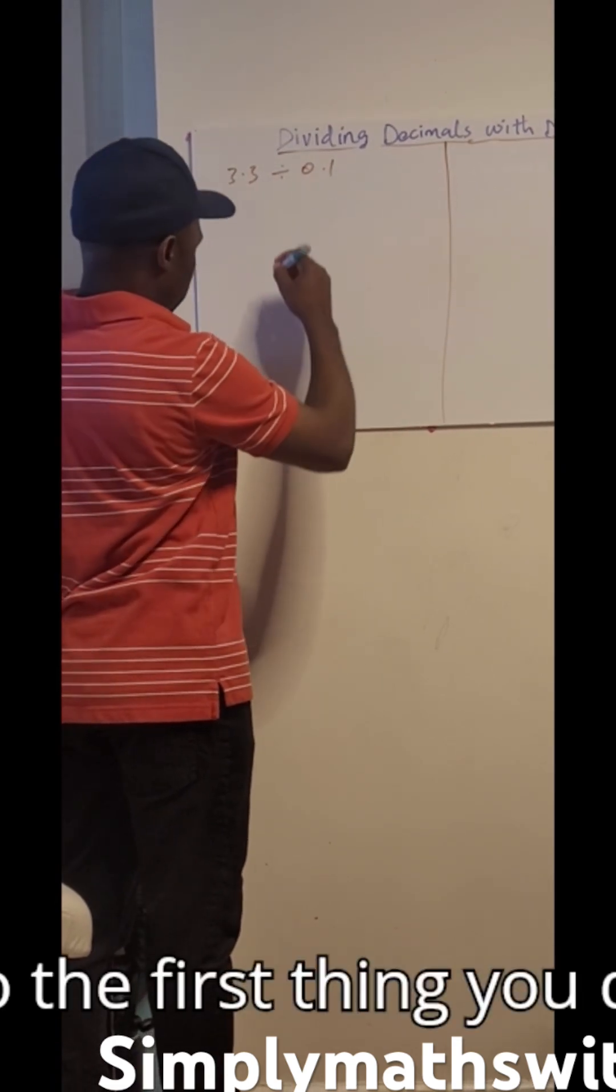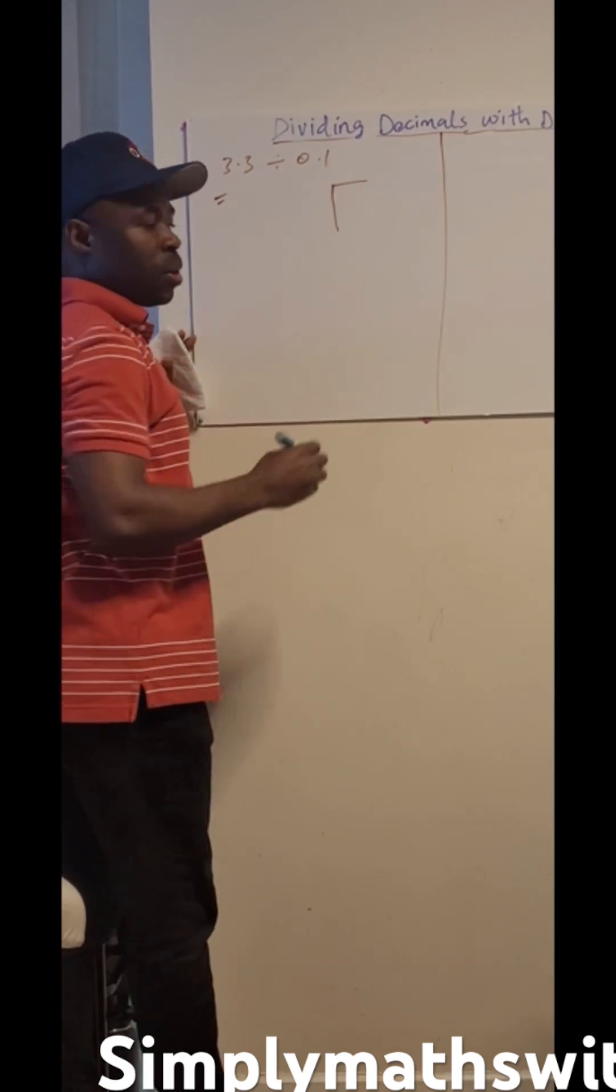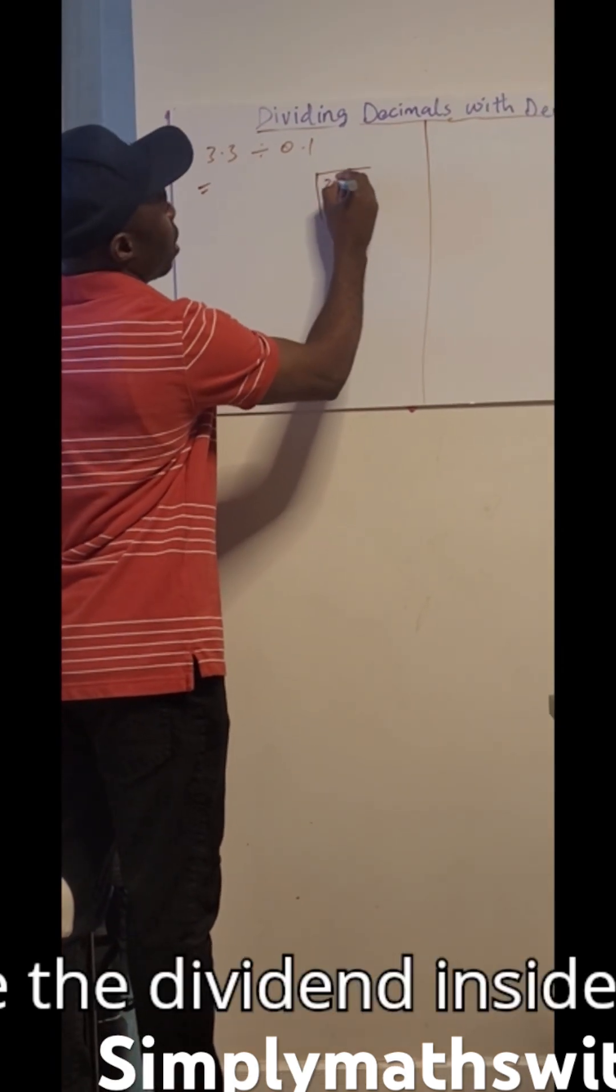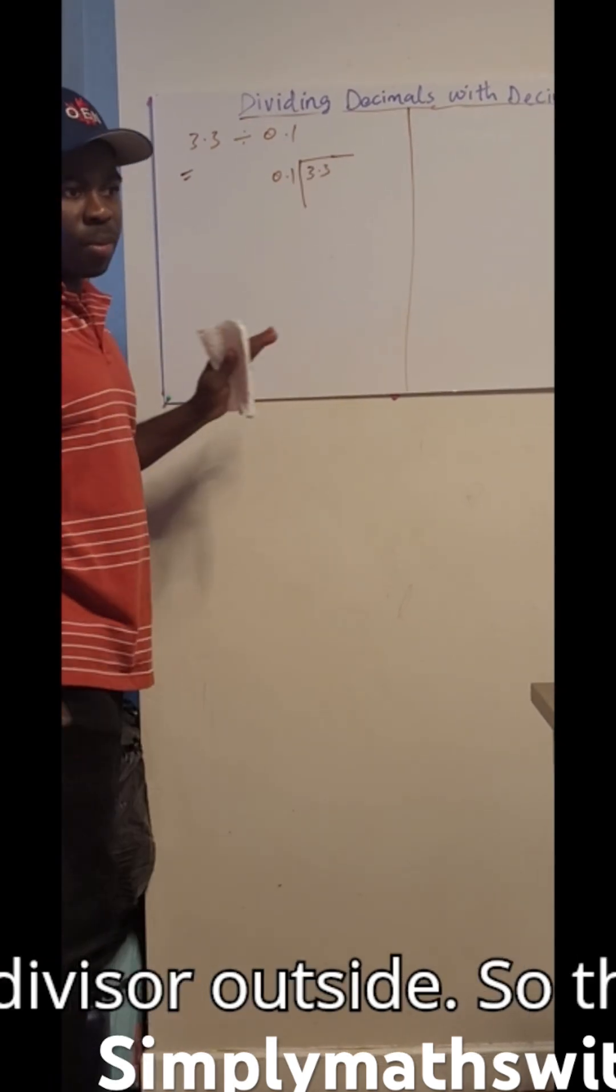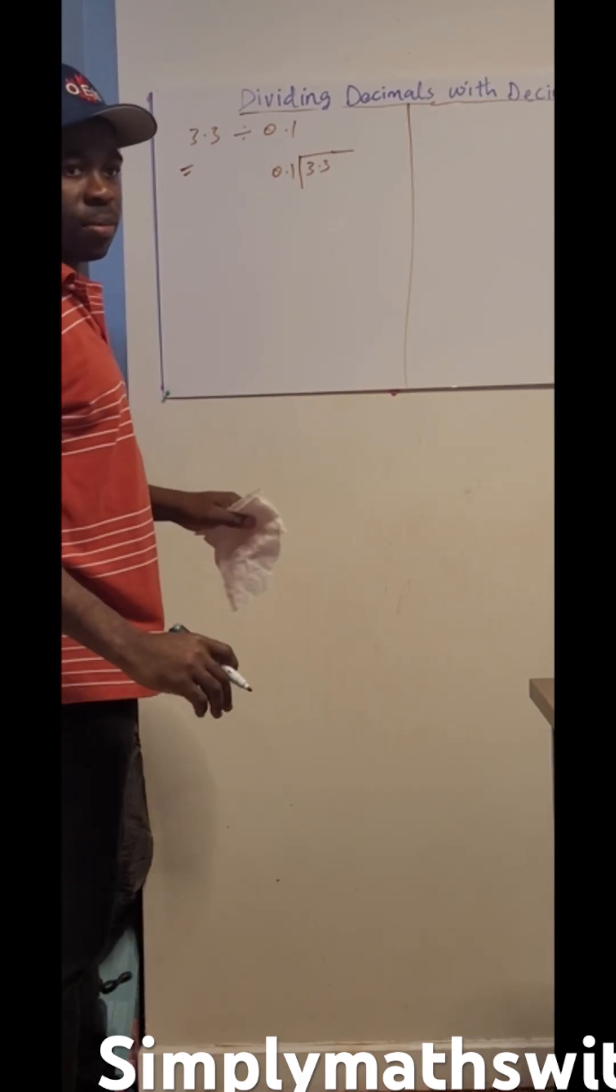So the first thing you do is you draw your long division line. Have the dividend inside and the divisor outside. So this is what it's looking like at the moment.